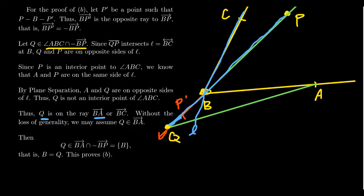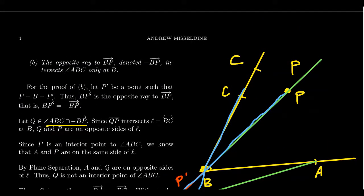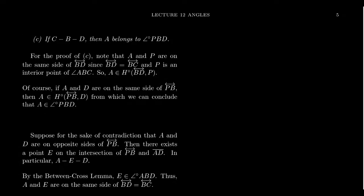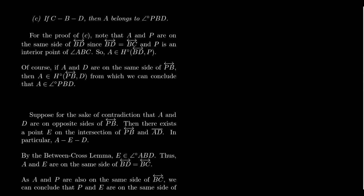The same conclusion holds if Q were on ray BC — ray BC and the opposite ray of BP intersect only at B. So Q has to equal B, and that proves the second condition: the opposite ray of an interior ray to an angle intersects the angle only at the vertex. Now for the third one — this is a lengthy proof with many parts, but it establishes important principles. The third principle: if B is between C and D, then A belongs to the interior of angle PBD.